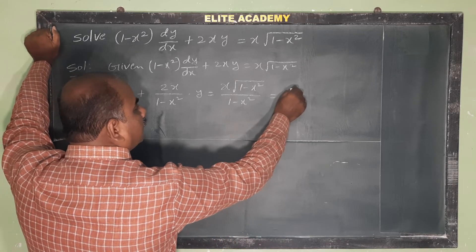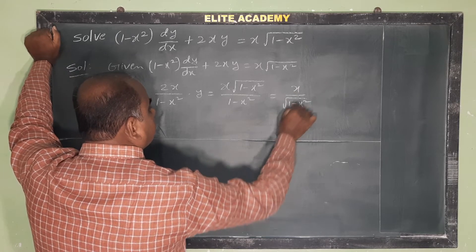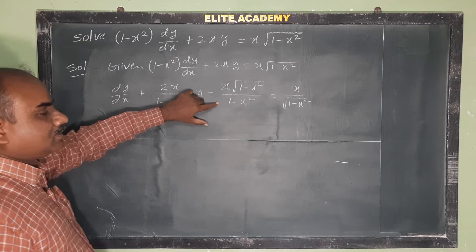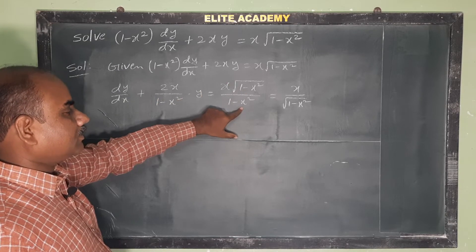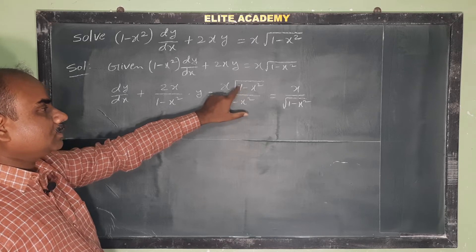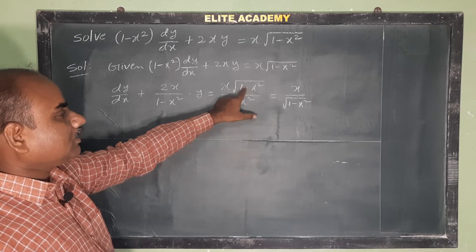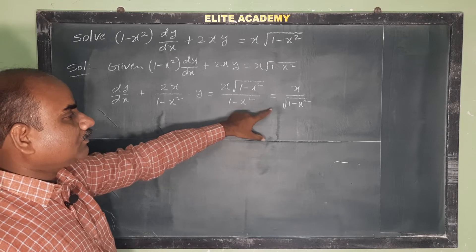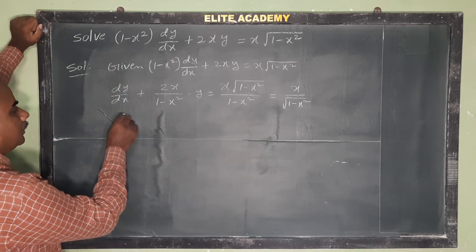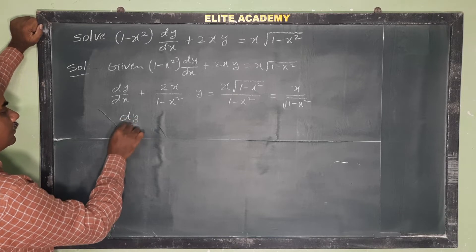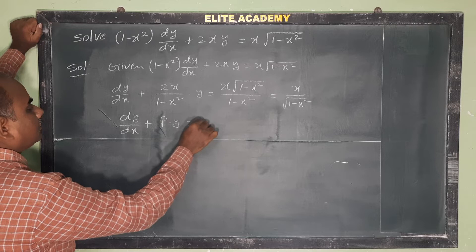Here it simplifies to x by root of 1 minus x square. We cancel by root of 1 minus x square: 1 minus x square to the power 1 by 2 gives a half in the denominator. Now it is in the general form dy by dx plus P into y equals Q.